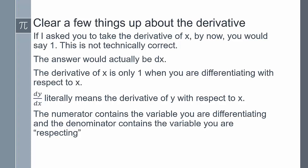By now, if I asked you to take the derivative of x in your head, you'd say it's going to be 1. But that's not technically correct — we've only focused on one scenario. If I were to take the derivative of x without specifying with respect to what, I'm actually going to be left with the differential, which is dx. The derivative of x is only 1 when you're differentiating with respect to x. That's why we've always seen it in the form of dy over dx — meaning take the derivative of y with respect to x. The numerator contains the variable you're differentiating, and the denominator contains the variable you're respecting.